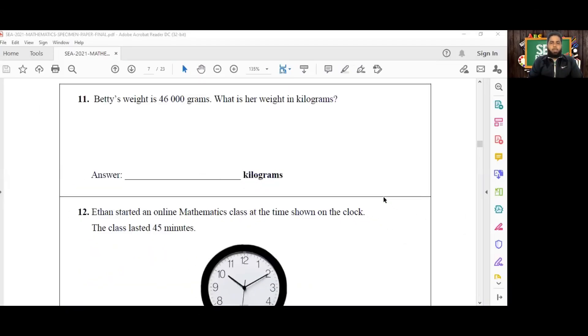Assalamu alaikum, good evening guys, and welcome back to our specimen paper series here at C Results Academy. Today we are beginning with number 11. These are the first measurement type questions that we'll be doing in the specimen paper. Of course, we're in section one so it won't be too difficult, but our aim is to get as many marks as possible in the exam total.